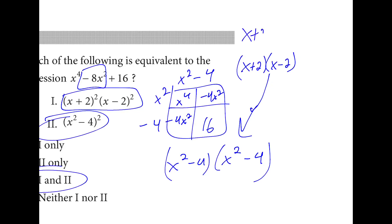If that was a little confusing, think about x plus two times x plus two times x minus two times x minus two, and you just pair these up. And each one is equivalent to x squared minus four.